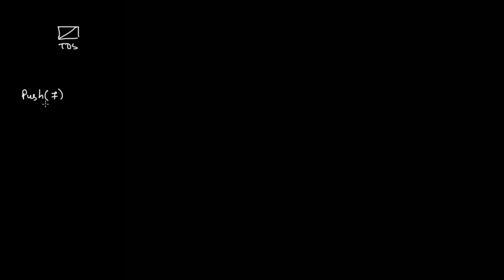So if you call push 7, there will be a new node storing 7, and the top-of-stack pointer will point to this new node, storing its address.